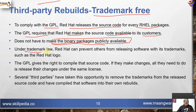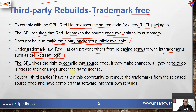Under trademark law, Red Hat can prevent others from releasing software with its trademarks, such as the Red Hat logo. The GPL gives you the right to compile the source code. If they make changes, all they need to do is release those changes under the same license. Therefore, several third parties have taken this opportunity to remove the trademark from the released source code and compiled it into their own rebuilds — for example, Oracle Linux, Scientific Linux, and CentOS Linux, all from the same source code. They are virtually the same.